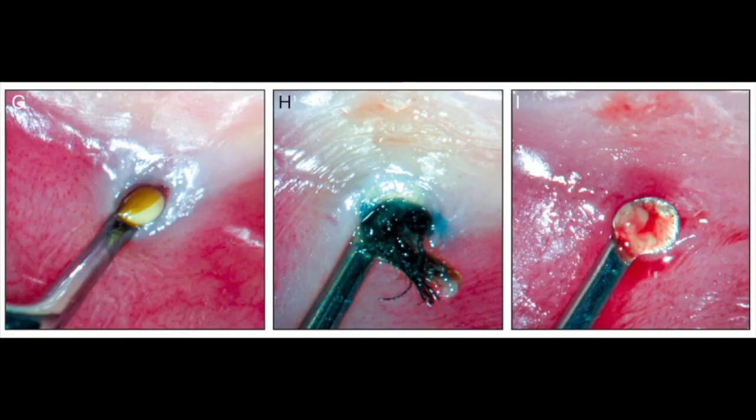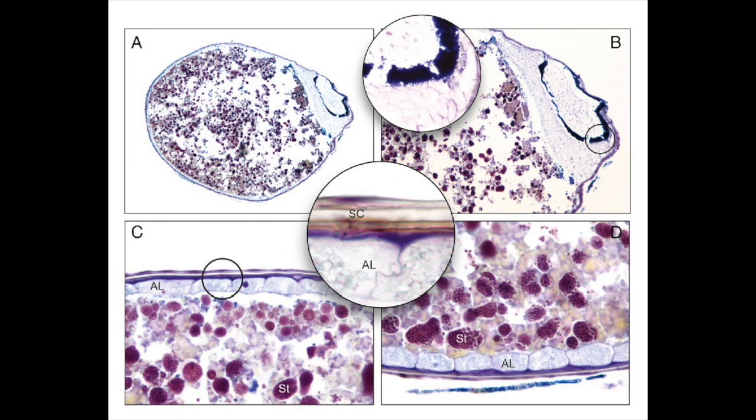Exploration under the operating microscope revealed a small seed associated with a dark filamentous structure inside. He removed both of them and proceeded with histological examination. The seed was from a fig fruit and was germinating under the mucosal conditions.